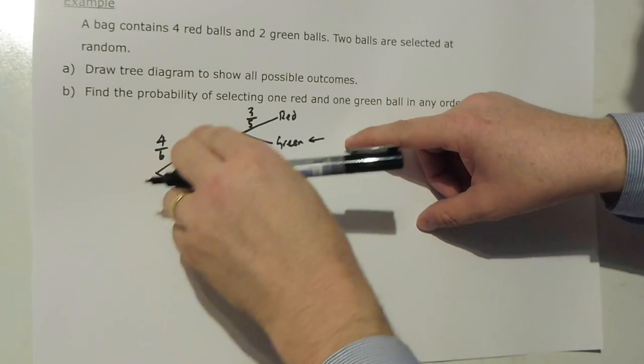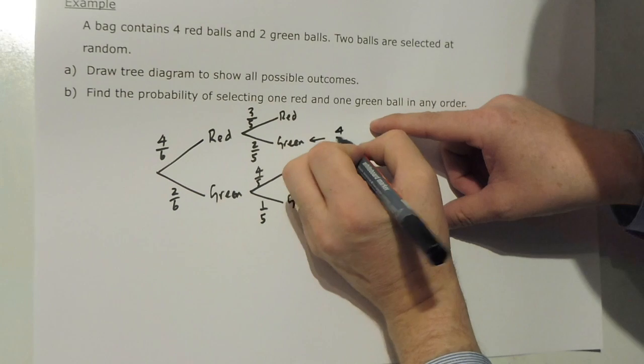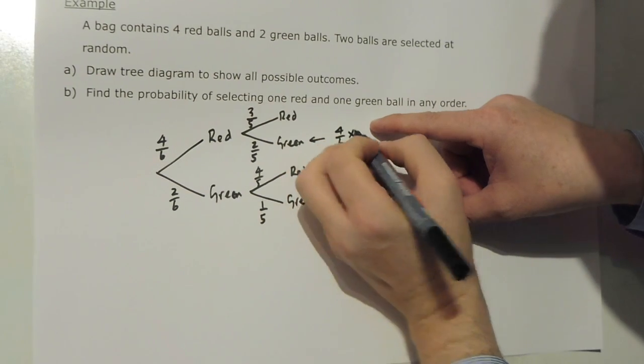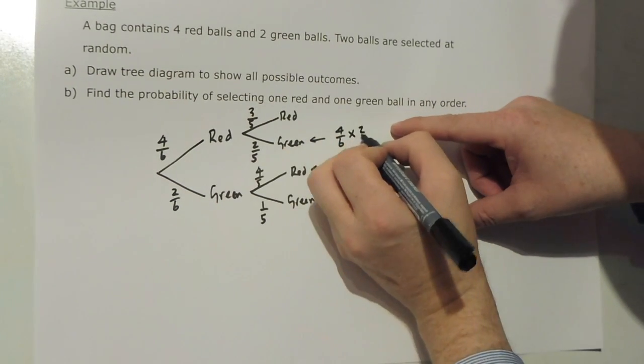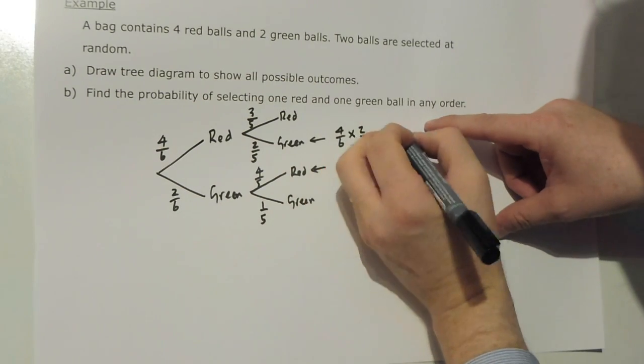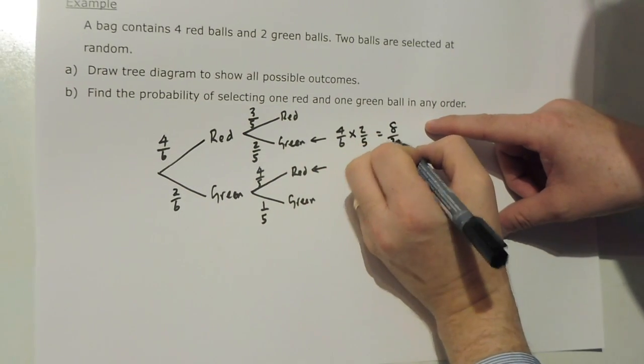So the first one, 4 over 6 is red and 2 out of 5 is green, which gives me a probability of 8 over 30.